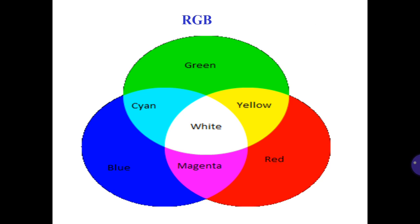And if you mix these colors — when you mix blue and green you get cyan, and when you mix blue and red you get magenta. And if you mix all the colors, you get white.